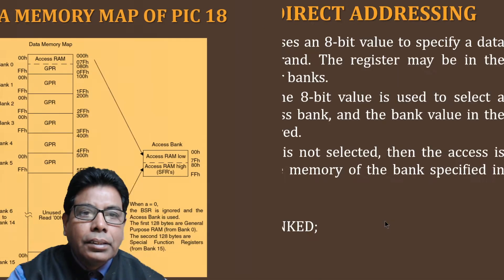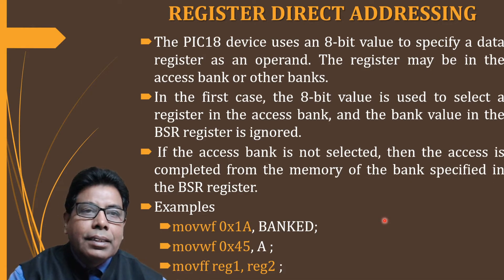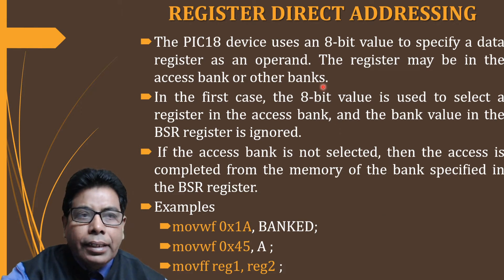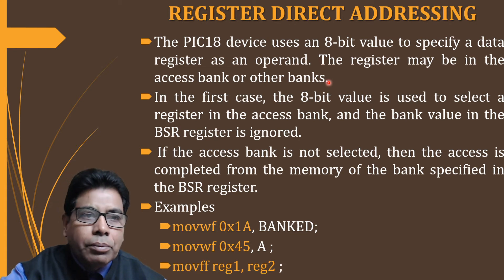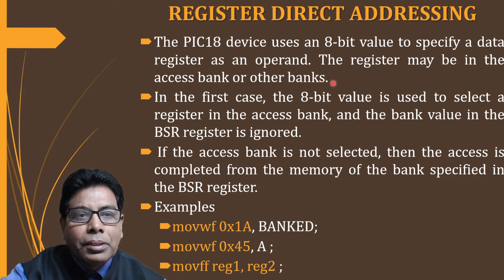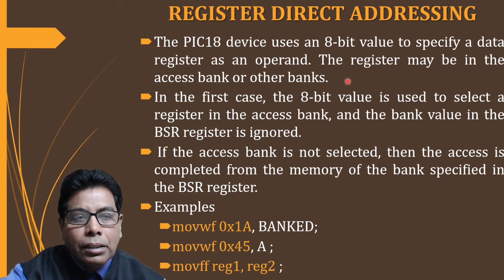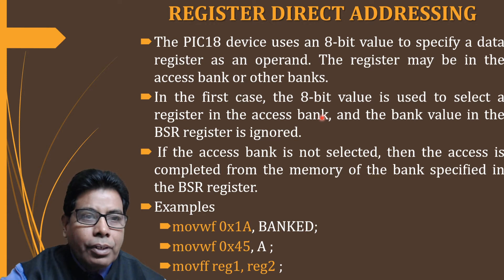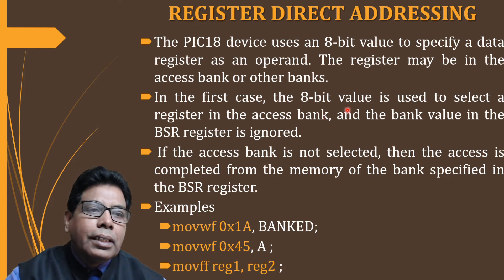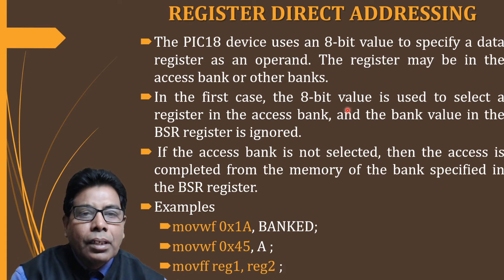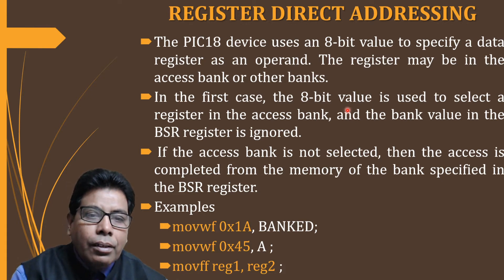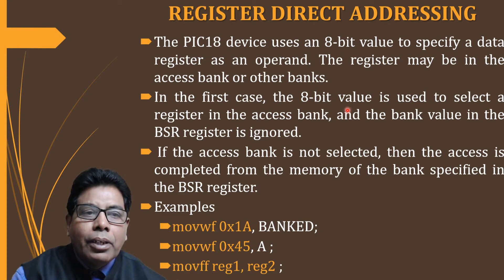Let us discuss the addressing modes now. First is register direct addressing. The PIC18 device uses an 8-bit value to specify the data register as the operand. The register may be in the access bank or other banks. If the 8-bit value selects a register in the access bank, the bank value in the BSR register is ignored and the 8-bit value is used directly. If the access bank is not selected, access is completed from the memory of the bank specified in the BSR register.